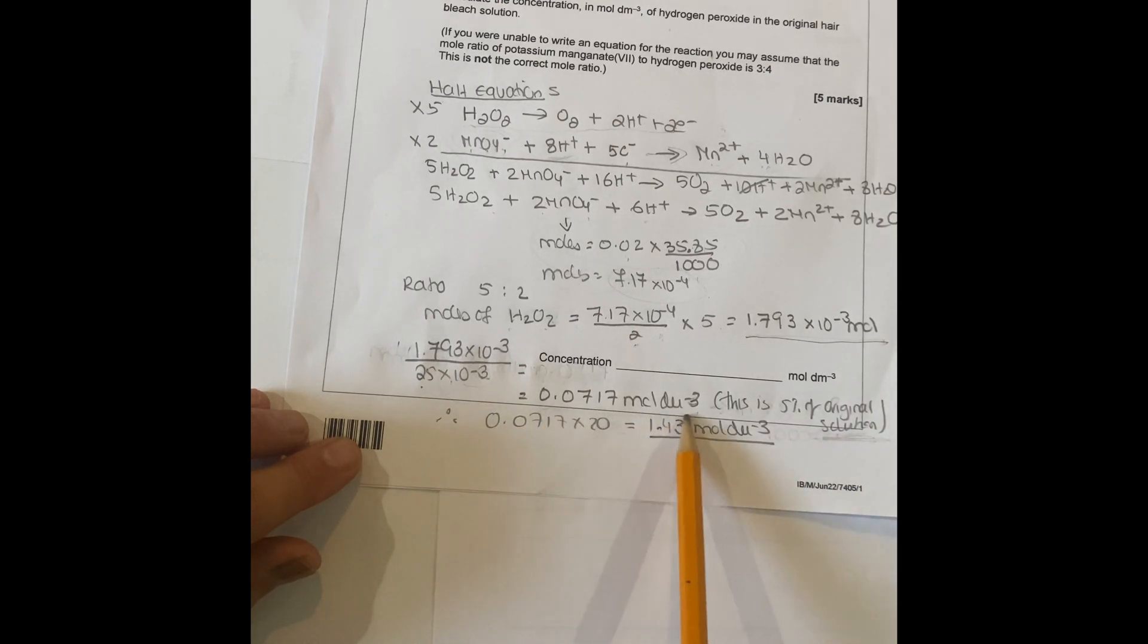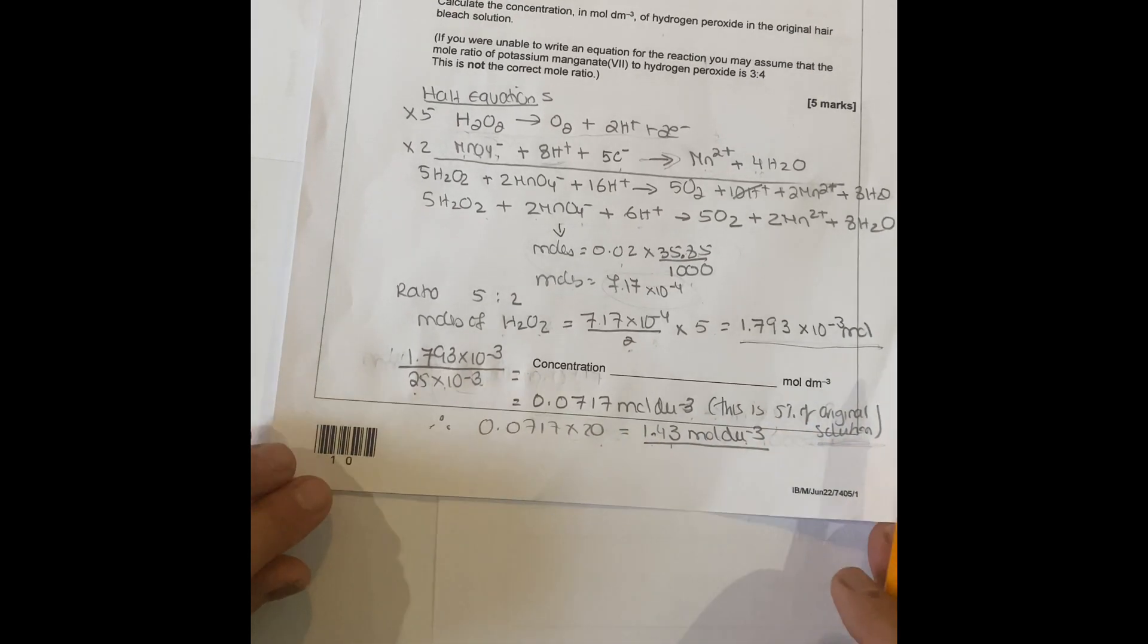You've got the concentration of the five percent, so therefore 0.0717 times 20 equals 1.143 mol per dm cube. It's 20 times 5 makes 100, so that's how you calculate that.